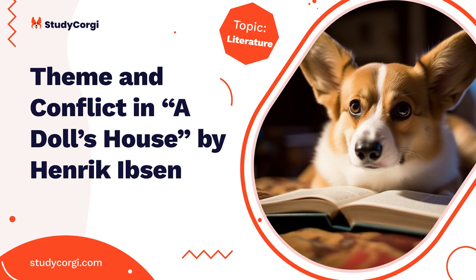Her father did it, then Torvald did it. Torvald reminds her of her duty as a wife and a mother, but she prefers to care about herself only and cut any relationship between her and her husband. The main conflict in this play shows how men in this society were controlling women in everything, even in their own choices in life. That's why this play rocked the stages of Europe when the play premiered.